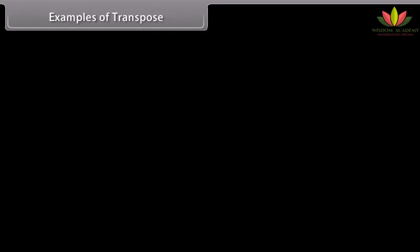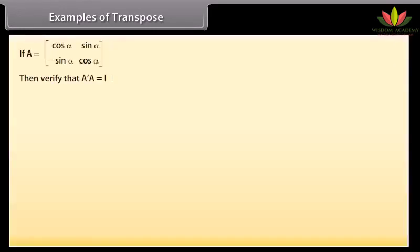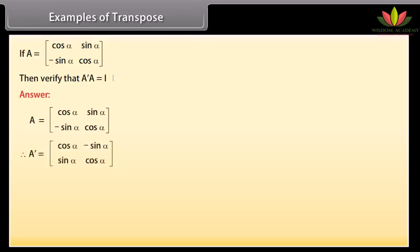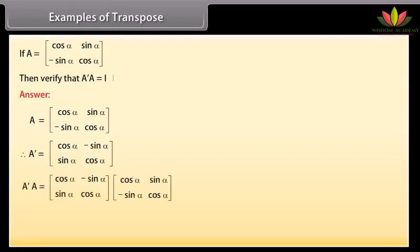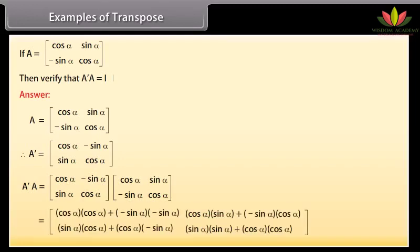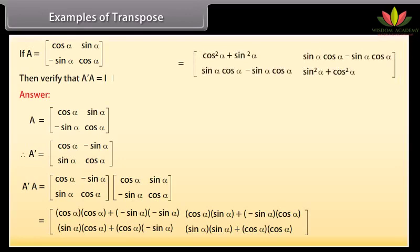Example of transpose: If A is given, verify that transpose of A multiplied by A is equal to the identity matrix. Therefore, transpose A' is matrix row-wise — first row: cos α, −sin α; second row: sin α, cos α. Multiplying A transpose and A and solving, we get A transpose × A = identity matrix. Hence verified.